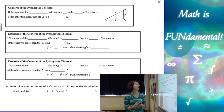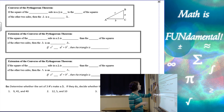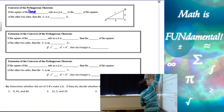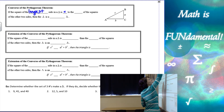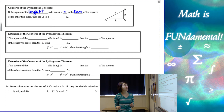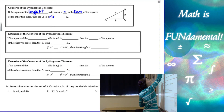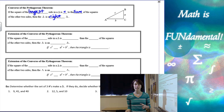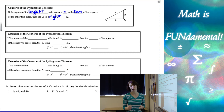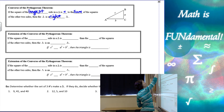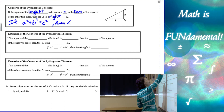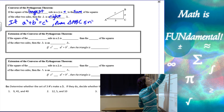Next we're going to talk about the converse of the Pythagorean Theorem. The converse takes any conditional statement and switches the hypothesis and the conclusion. If we take the converse of the Pythagorean Theorem, we have: if the square of the longest side in a triangle is equal to the sum of the squares of the other two sides, then it has to be a right triangle. In the Pythagorean Theorem we always have to be given that it's a right triangle and then apply our formula, but here we apply the formula to see if it is a right triangle.